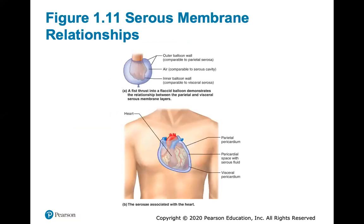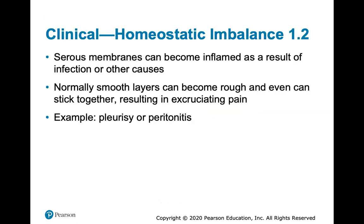If you were to put your hand into a balloon, the outer balloon wall would be comparable to the parietal serosa — the wall lining the body cavity. The air of the balloon is comparable to the serous cavity, which contains fluid. The inner balloon wall touching your hand would be the visceral serosa. For example, the heart is surrounded by the visceral pericardium covering the heart itself, the pericardial space has serous fluid for friction and cushioning, and the parietal pericardium is the outer layer of that serous membrane lining the body cavity wall.